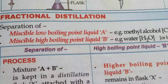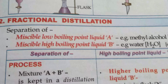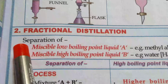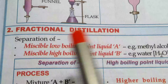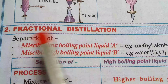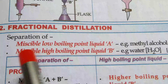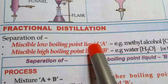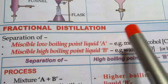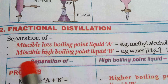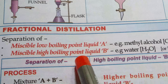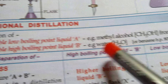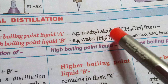Next, fractional distillation. This process is very important. Fractional distillation is a separation process where an immiscible low boiling point liquid is separated out from an immiscible high boiling point liquid. For example, methyl alcohol, which has a lower boiling point than water.